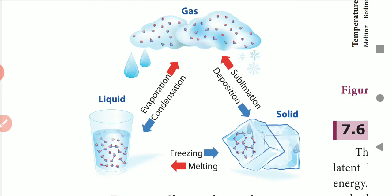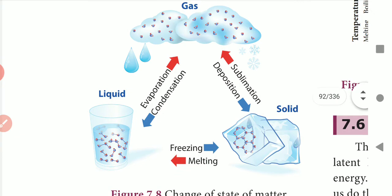When water is frozen it becomes an ice cube. If you place an ice cube in open space at hot temperature, you can see a smoke-like substance — that is a solid directly converting into a gaseous substance, which is called sublimation.